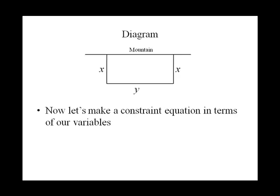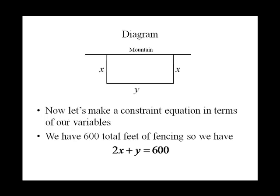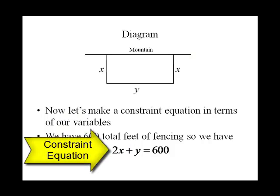Now, let's see if we can come up with a constraint equation because what we saw is our objective function was in terms of two variables. Well remember, we only have 600 feet of fence to work with, so if we add up x plus y plus x, it can only equal 600 feet. Simplifying, we get 2x plus y equals 600. That's our constraint equation.